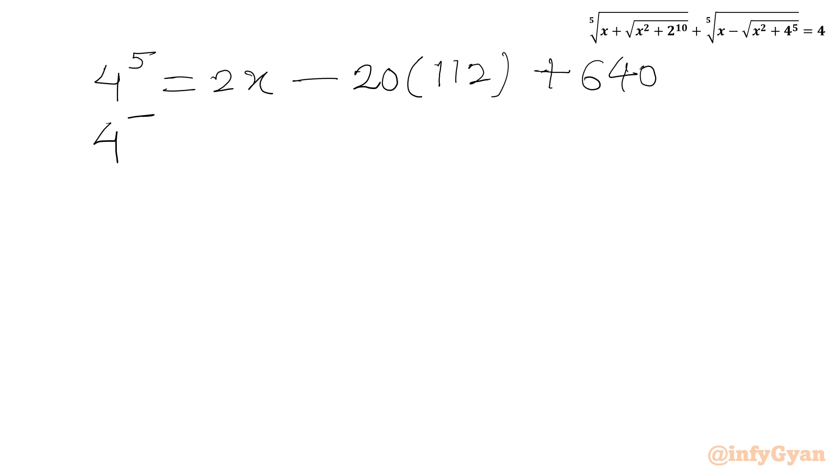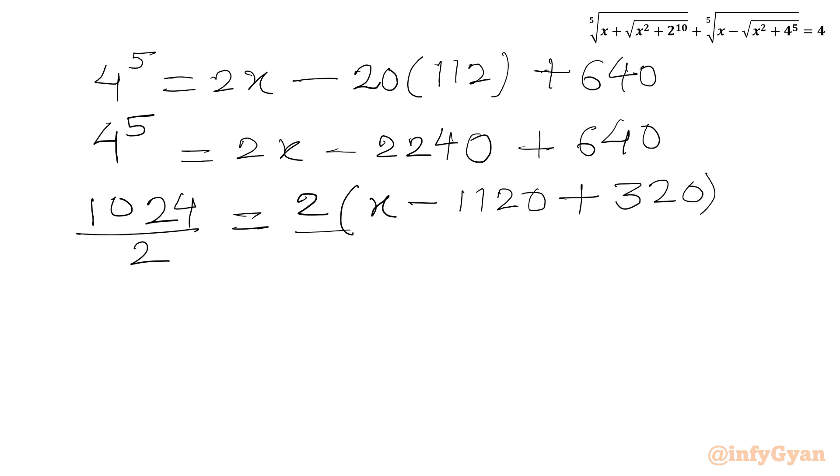So 4 power 5 equal to 2x minus 20 times 112 plus 640. Now I can write 4 power 5 will be equal to 2x minus 112 times 20, 2240 plus 640. Let us divide this equation by 2. So 4 power 5 we can write 1024 first divided by 2 and right hand side I will take 2 common.